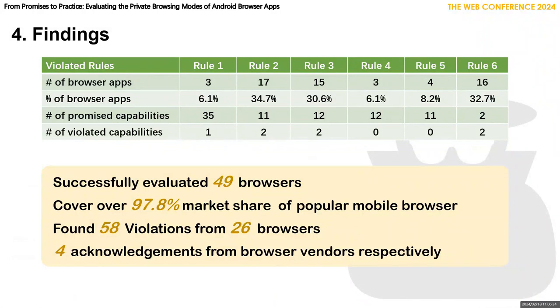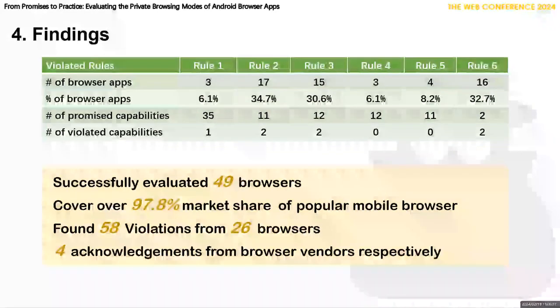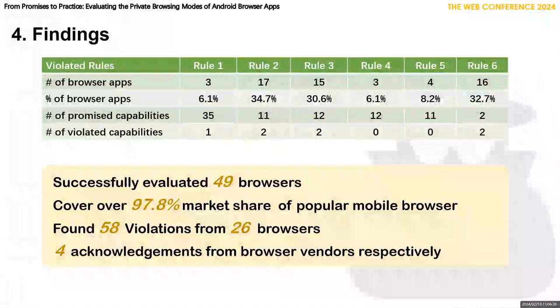Some of these violations come from the promised capabilities of the browser. We discovered 58 violations from 26 browsers. We reported our discovered issues to the corresponding developers, and four of them have acknowledged the issues.